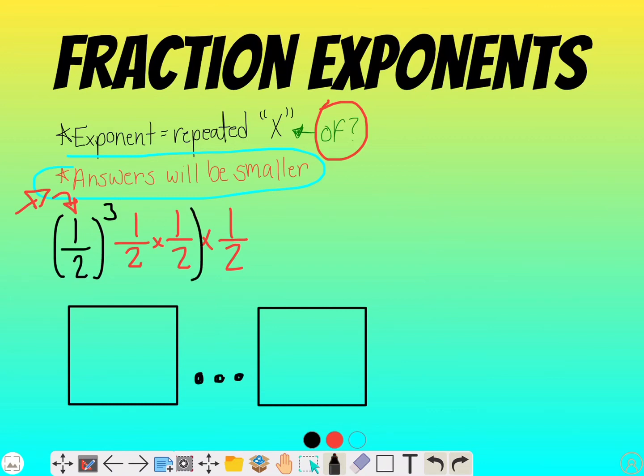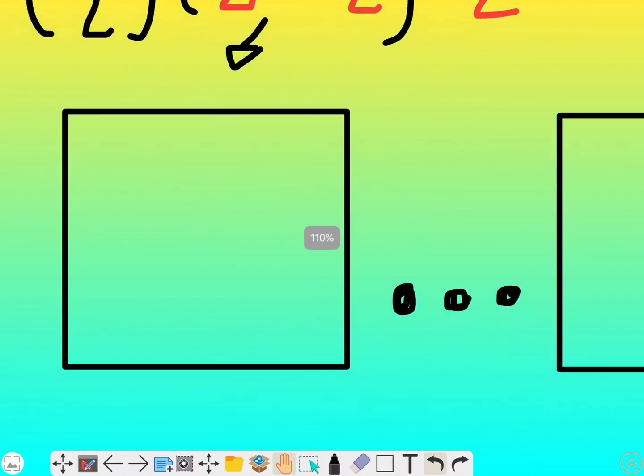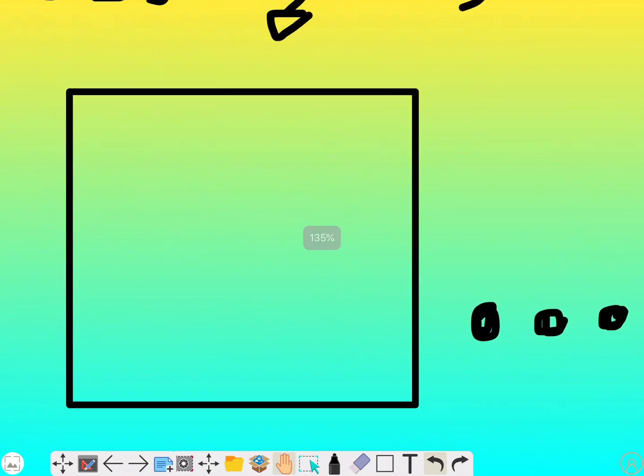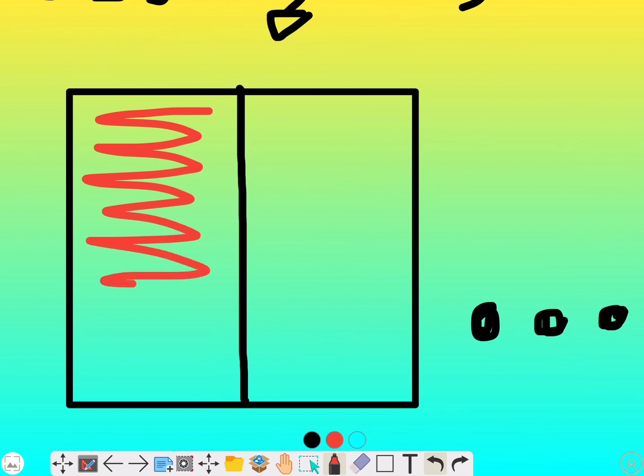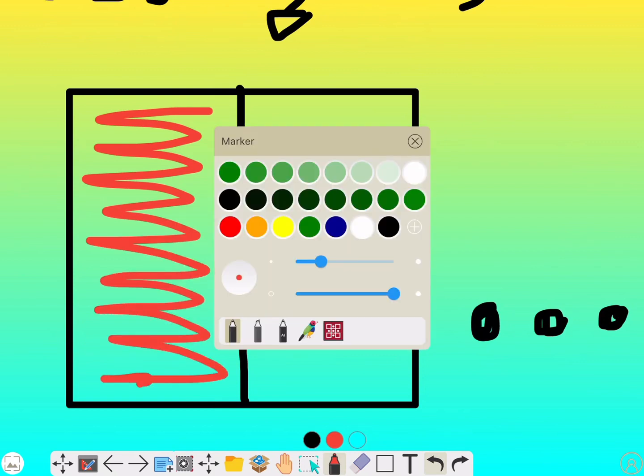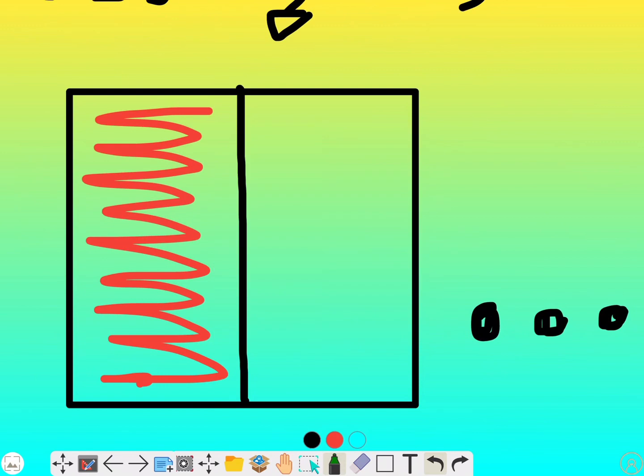Now we're going to do this first problem, one half times one half down here. So I'm going to break apart this fraction tile into one half vertically. I'm going to shade in one. And that's like saying I have a half a pan of brownies and I'm going to go the other way horizontally. And I'm going to take half of that half.